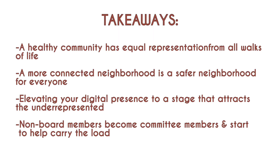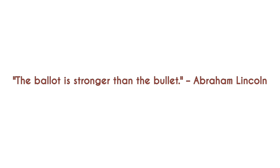The fifth stage of Reach culminates in a healthy and engaged community in month five. At this point, your neighborhood organization will be using all of the tools you learned in months one through four, and you will begin welcoming new people from the community. Your board will be setting goals to increase voter and candidate turnout in coming elections and planning engaging community events well into the new year. Takeaways from month five include: a healthy community that has equal representation from all walks of life, a more connected neighborhood is a safer neighborhood for everyone, elevate your digital presence to attract the underrepresented, and non-board members become committee members and start to help carry the load. 'The ballot is stronger than the bullet.' — Abraham Lincoln.